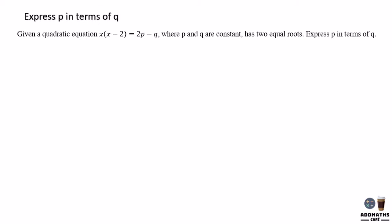Express p in terms of q. Given a quadratic equation where p and q are constant has two equal roots. So the two equal roots will be applying with the formula b squared minus 4ac equal to zero and express p in terms of q.